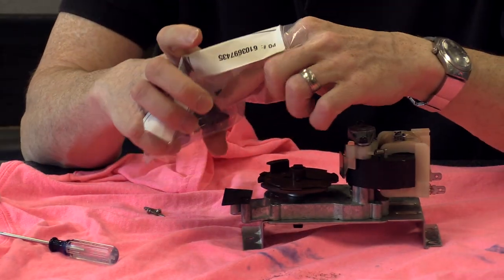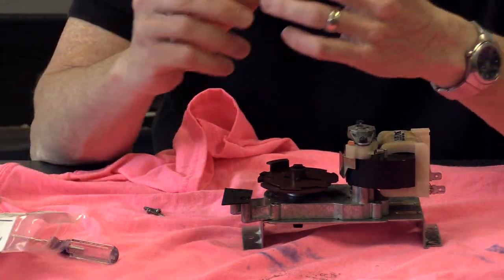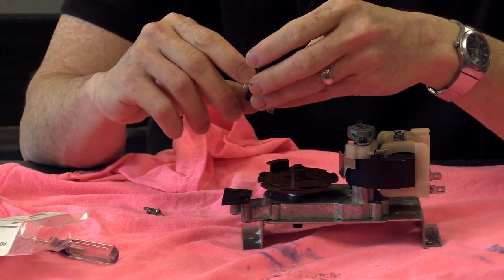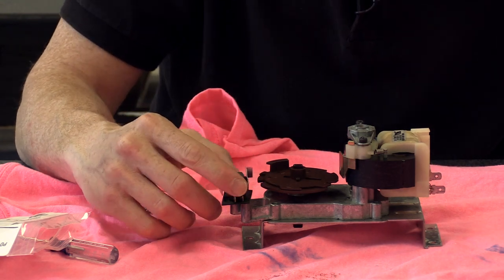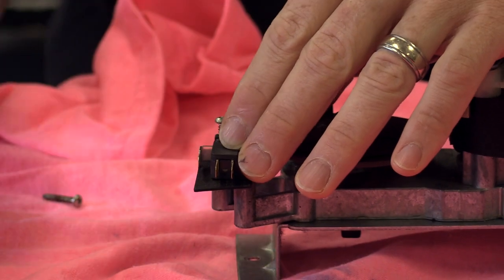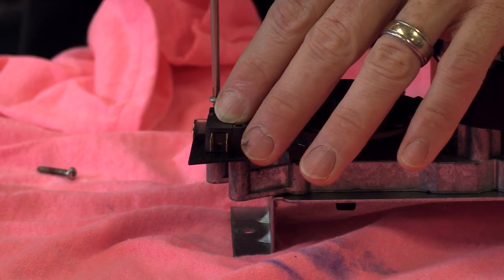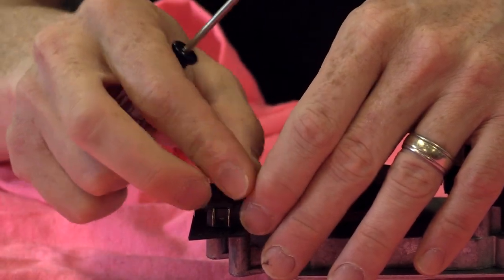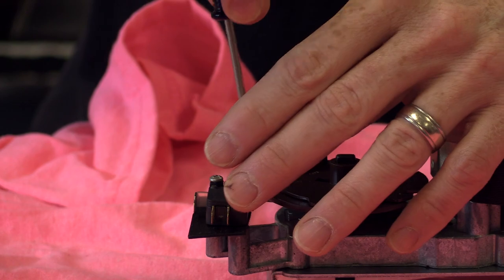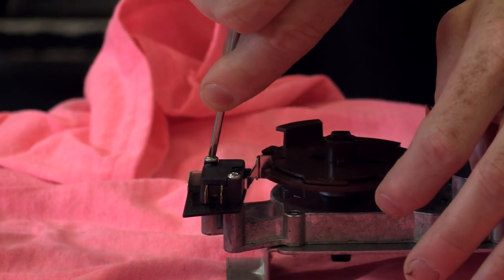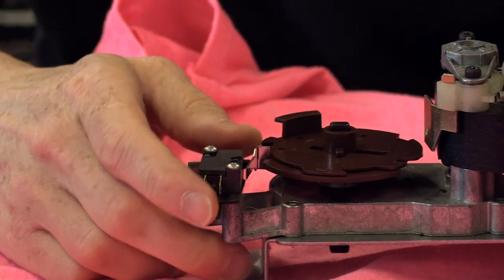So here we go. We've got the bad switch. Simply get one of my new switches. Different color, but it's the same exact switch. Line it up. Put my screws in. I don't tighten them both until I get both of them in there. Okay, so that's the first thing I want to do to fix this.